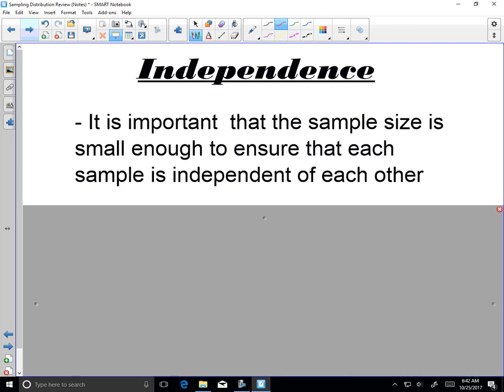The next thing that we look at is independence. This is our Goldilocks idea. The sample can't be too big, can't be too small. So we have to make sure that our sample size is small enough that each sample is independent of any other sample.